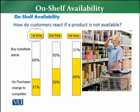For the first time, in 69 percent of cases the customer will buy a substitute product. For example, if the customer is there to buy Coca-Cola, maybe they will buy Pepsi. In 31 percent of cases, the customer will not purchase, or maybe change to a competitor and buy that particular product somewhere else.